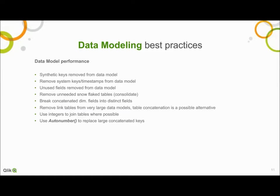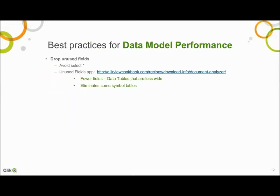Dropping unused fields is made easy by leveraging Rob Wunderlich's Document Analyzer app found in the QlikView cookbook. The analyzer figures out which data fields loaded into your application are not actually leveraged in the logic or the presentation layer. These unnecessary fields can be instantly recognized and discarded, ensuring that you are only loading and indexing the pieces of data necessary for consumption. The effect of removing a whole data field means purging an entire symbol table, as well as removing one column from the associated data table.